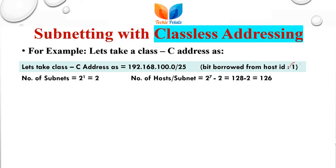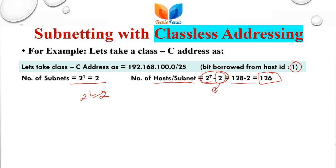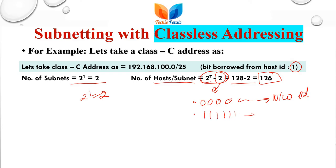Since we have one bit from the host ID, the possible number of subnets is 2 raised to power 1, which equals 2. The number of possible hosts per subnet is 2 raised to power 7 minus 2, that is 128 minus 2, equals 126. The minus 2 means: if all host bits are 0, that represents the network ID, and if all host bits are 1, that represents the broadcast ID.